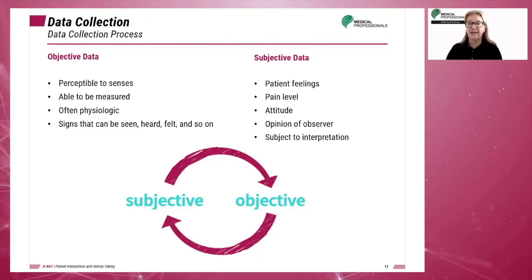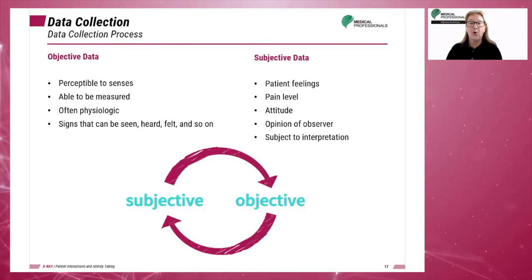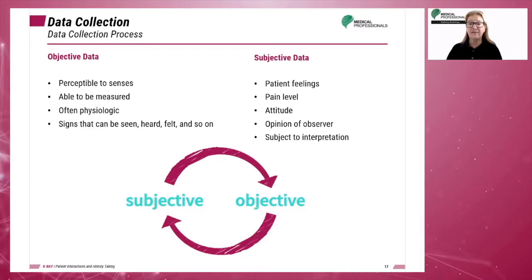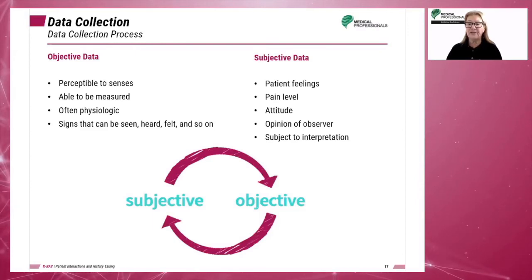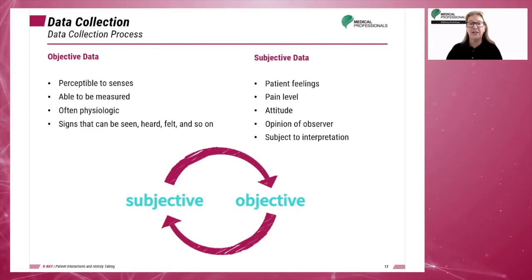Objective data can be measured — this data can be seen, heard, or felt. Fever, temperature, or a lump are examples of objective data. Subjective data are things that are perceived by the affected individual only, such as pain and feelings such as sadness. Regardless of the data, the technologist should never disregard the information given by the patient.